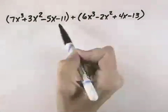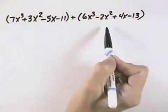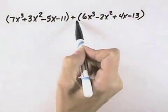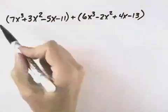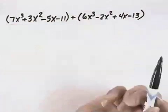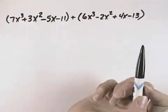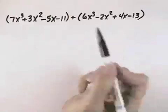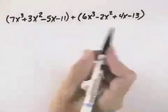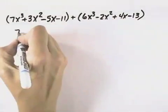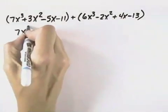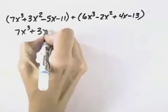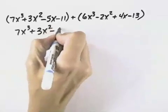Here we want to add these two polynomials. In this case, it's just a plus sign with nothing in front of either of the polynomials, so we do not need to use the distributive property. We can just drop our parentheses. So the first thing we can do is remove the parentheses that are separating the two polynomials.